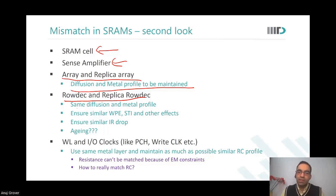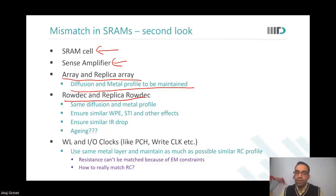Metal layers are all drawn in different steps. Metal one could have a different width and height, whereas metal three can see a different width and height. Even if the material is the same, they could have different statistical positioning or different width and height across different metal layers.